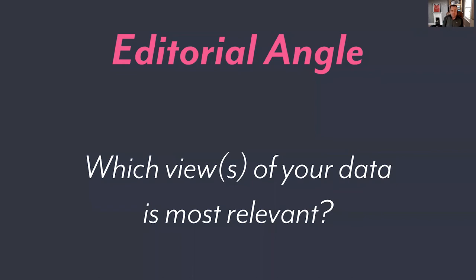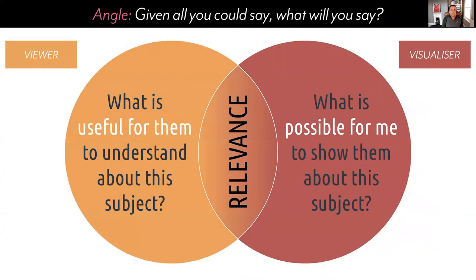First, editorial angle: what's the angle of analysis? What's the view of your data — what photograph are you taking of your data? Do you need one view or several to help people synthesise understanding? The word relevance is really important here. Given all the things you could say, what you will say is the central decision. It's the intersection between all the things you think could be useful and interesting to the audience about this subject, and what's possible for you to show given the data you have.